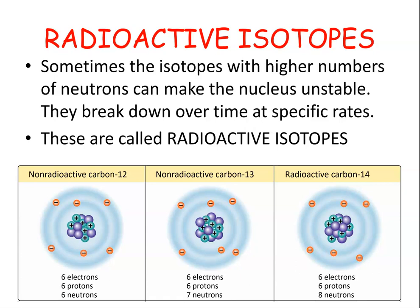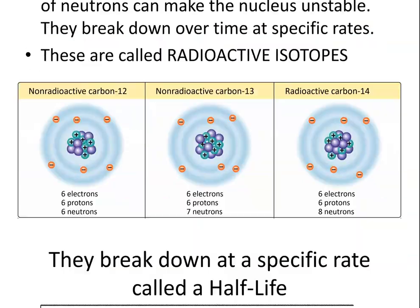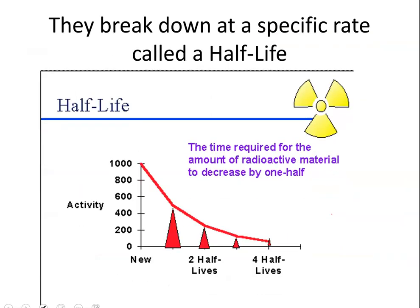Here's an example: carbon-12 has six protons and six neutrons. Carbon-13 has seven neutrons. Carbon-14 has eight neutrons — the only thing changing is the number of neutrons, and carbon-14 is unstable. In the little activity you saw the nucleus sort of shaking because it was unstable. What carbon-14 does over time is it breaks down at what's called a half-life — an amount of time for about half of that isotope to decay.